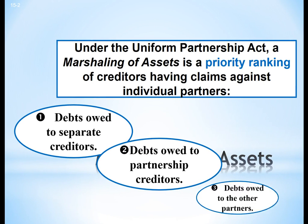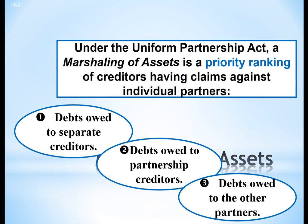Under the Uniform Partnership Act, marshalling of assets is a priority ranking of creditors having claims against individual partners. Debts first have to be paid to separate creditors, then next are debts owed to the partnership creditors, and then debts owed to the other partners.